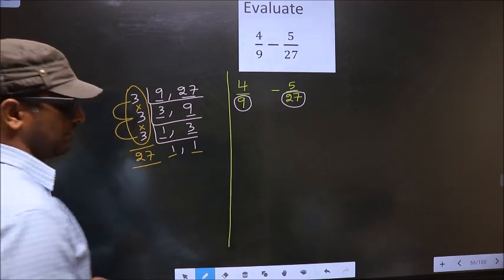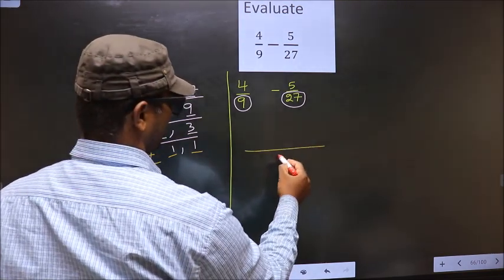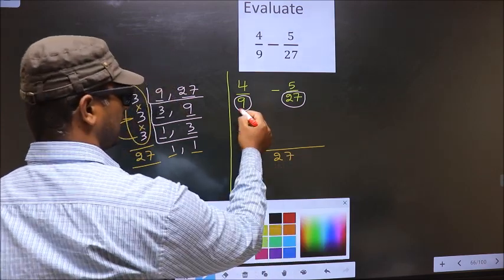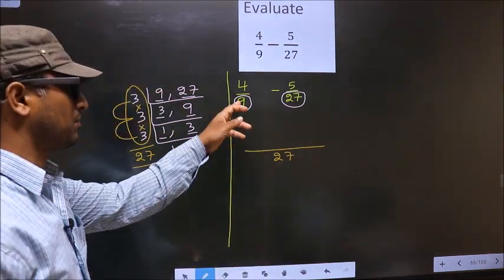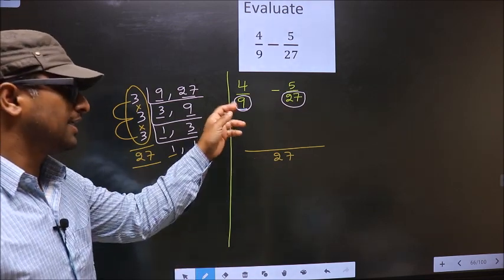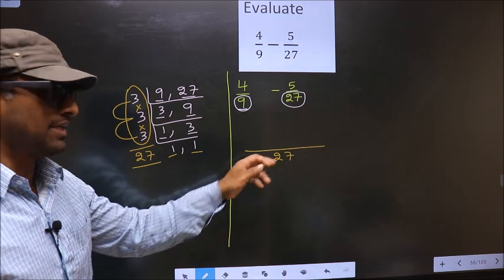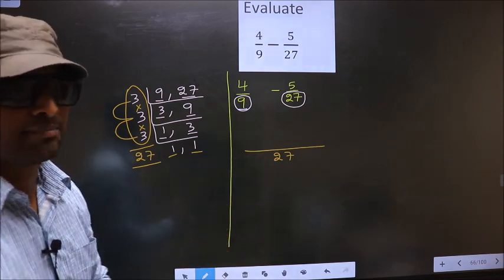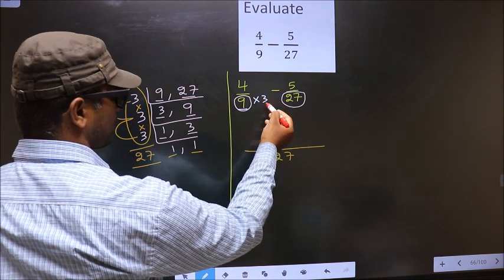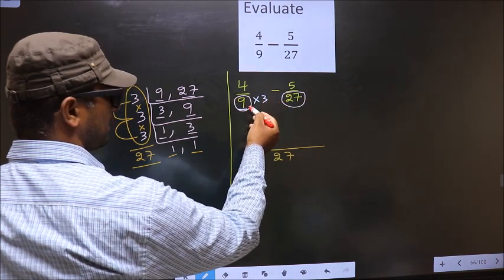Now here we have 1. So focus on the other number that is 3. 3 is the prime number. So 3 times 1 is 3. We got 1 in both the places. So our LCM is the product of these numbers. That is 3 into 3 into 3. So 3 into 3 is 9, into 3 is 27.